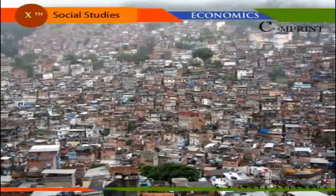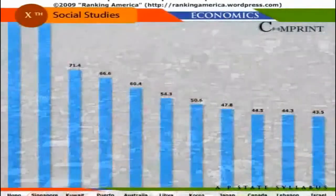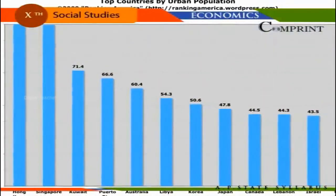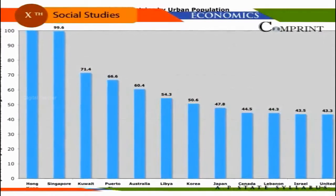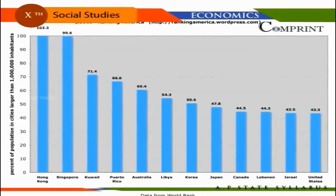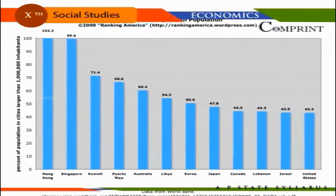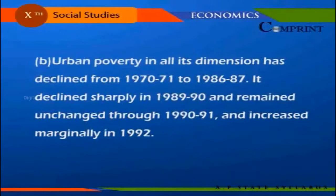Rural and urban poverty is of two types: absolute poverty and relative poverty. Regarding trends in poverty of rural and urban population of India, there is an overall decline of rural poverty in all its dimensions for the period between 1970-71 and 1989-90, with a sharp increase in 1992 compared with 1991. Urban poverty in all its dimensions declined from 1970-71 to 1986-87, declined sharply in 1989-90, and remained unchanged through 1990-91, then increased marginally in 1992.